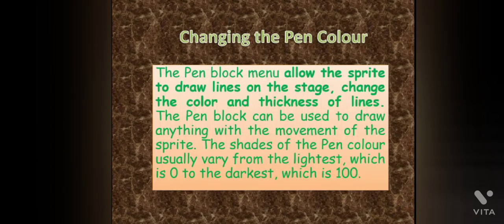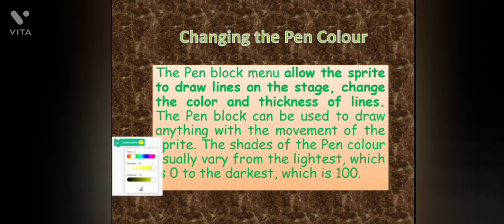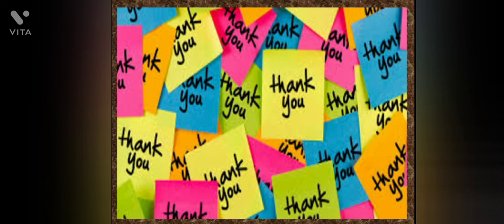Changing the pen color. The pen blocks menu allows the sprite to draw lines on the stage, change the color and thickness of the line. The pen block can be used to draw anything with the movement of the sprite. The shades of the pen color vary from the lightest, which is 0, to the darkest, which is 100.